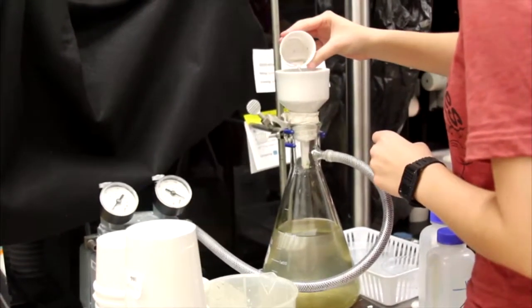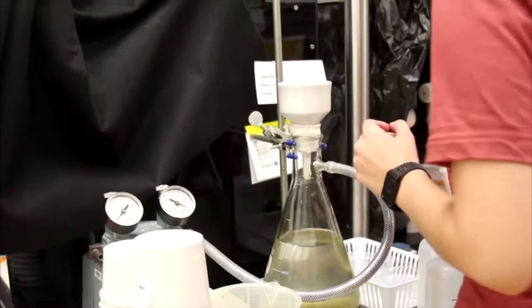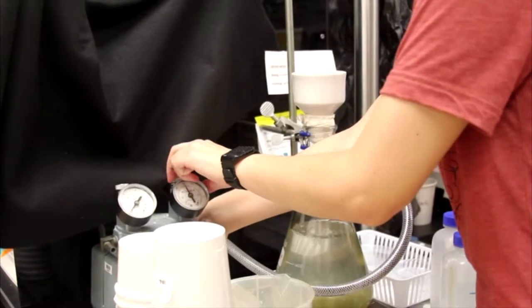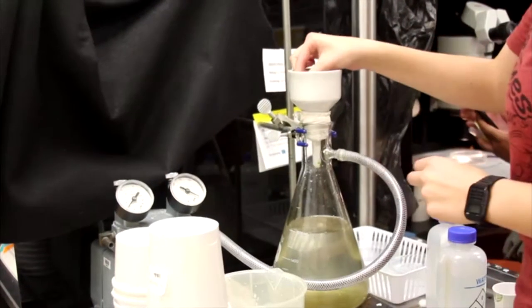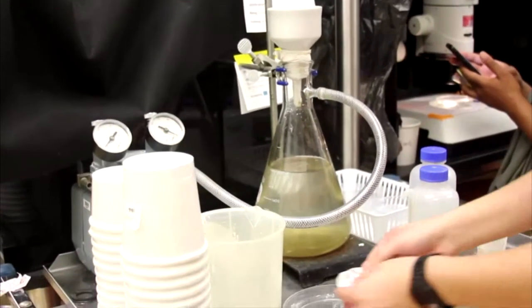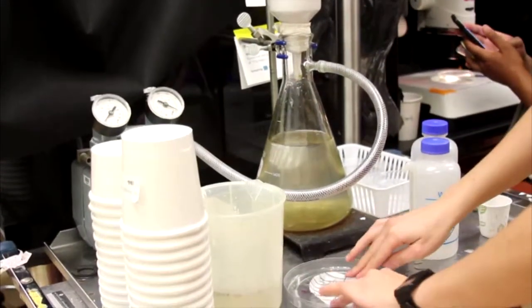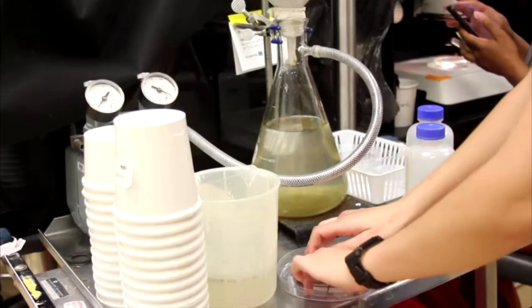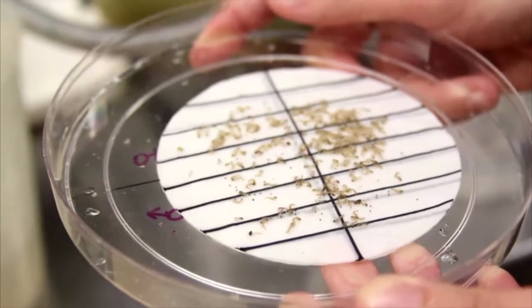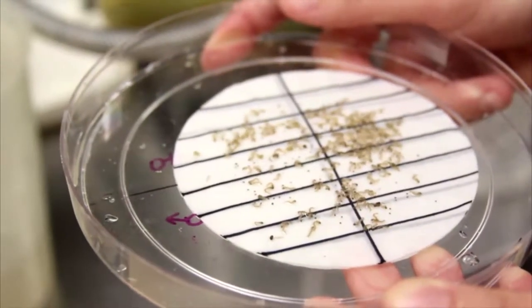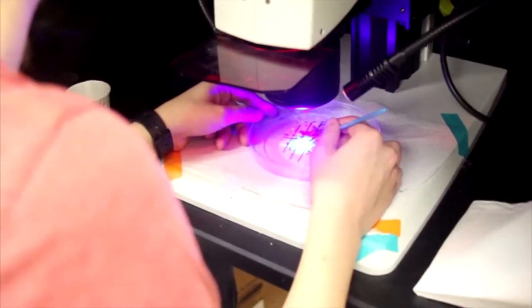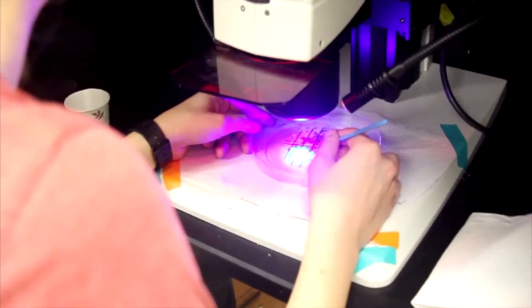Pour the larva onto the filter paper and use a vacuum pump to remove the excess water. Be careful not to vacuum it for too long as this may harm the larva. Add a couple drops of water to the petri dish to prevent the larva from drying out.